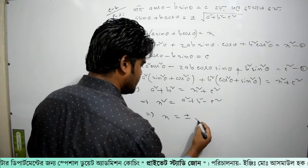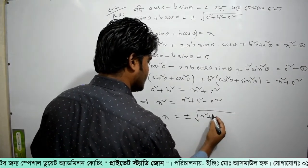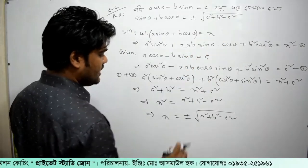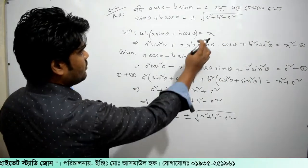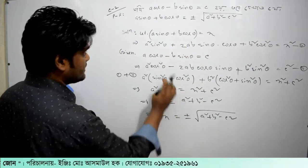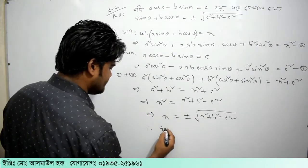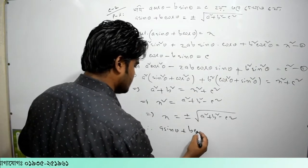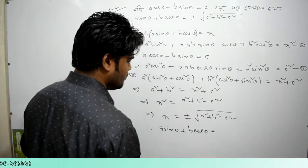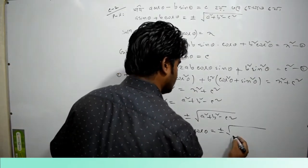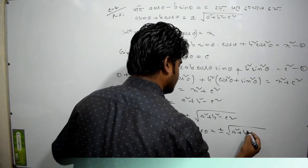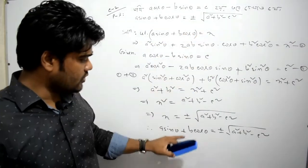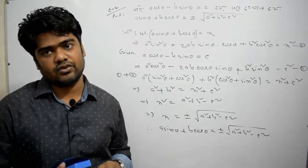Therefore the result is: plus or minus root over a² plus b² minus c². The right-hand side equals the left-hand side. Left-hand side equals right-hand side. That is proved.